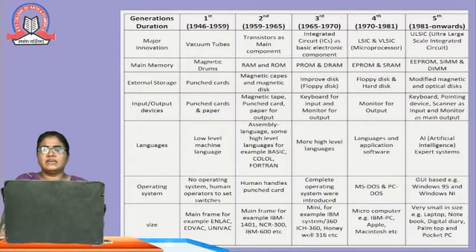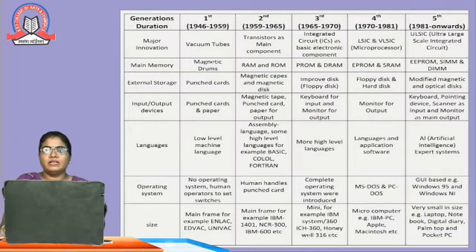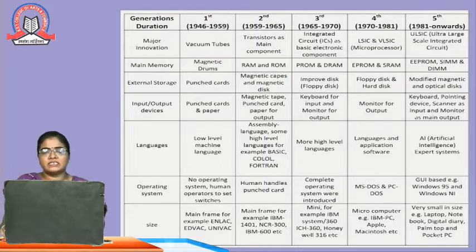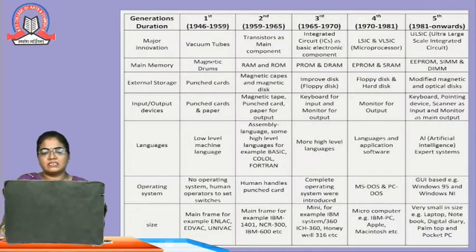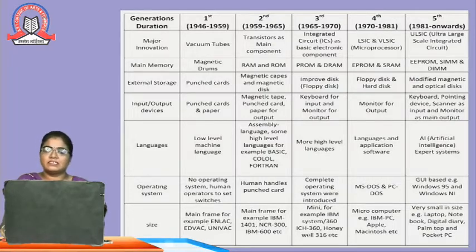In the third generation, integrated circuits were used. Basic electronic components were employed. FRAM and DRAM were introduced, along with improved disks. Floppy disk was introduced in the third generation. Keyboard for input and monitor for output were introduced. More high-level languages were available, and the operating system was introduced. Examples include IBM System 360, ICH 360, and Honeywell 316 as minicomputers.